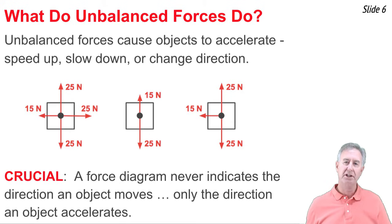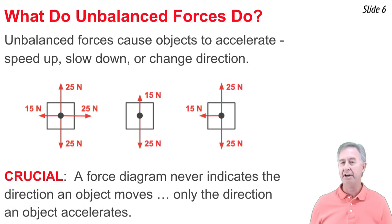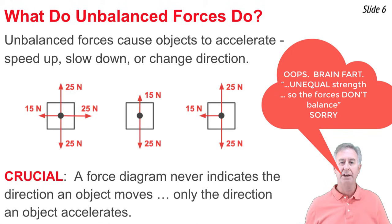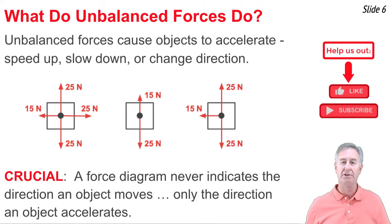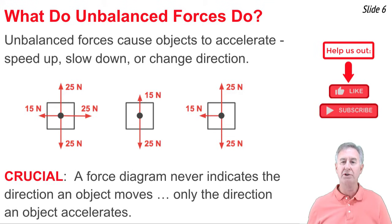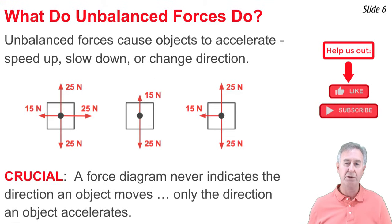Balanced forces cause objects to continue doing whatever they're doing — that is, to not accelerate. But what do unbalanced forces do? Unbalanced forces cause objects to either speed up, slow down, or change direction — that is, they cause objects to accelerate. But we have to be careful: when we look at a force diagram, we cannot determine which way the object is moving. Forces don't cause objects to move in a given direction; they only cause objects to accelerate in a given direction. The direction of acceleration is what becomes important when associating motion with force diagrams.